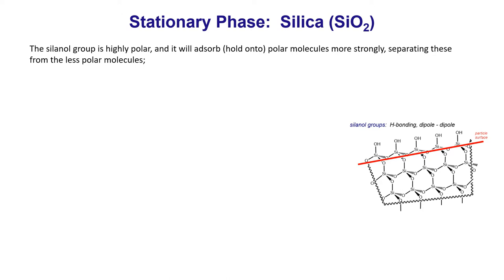Let's look at the stationary phase in detail. The stationary phase is silica dioxide. If you look at the functional group of silica gel, it has a silicon atom with a hydroxy group — we call this a silanol group. This silanol group is very polar and can do hydrogen bonding or dipole-dipole interactions with molecules. That is how polar molecules are adsorbed onto the TLC plate, while less polar molecules interact less with the silanol group.